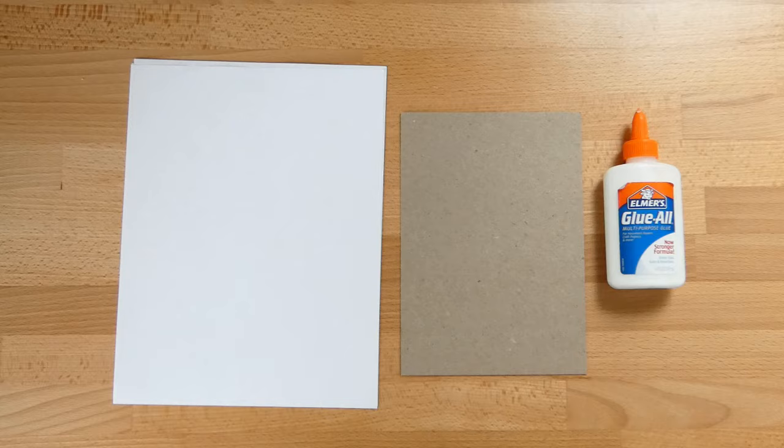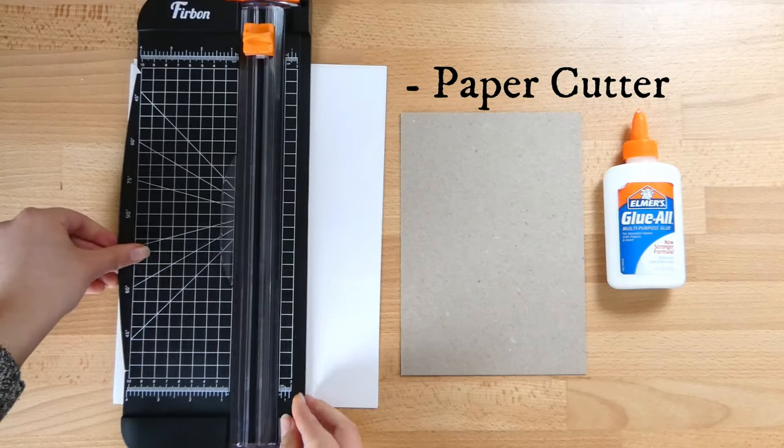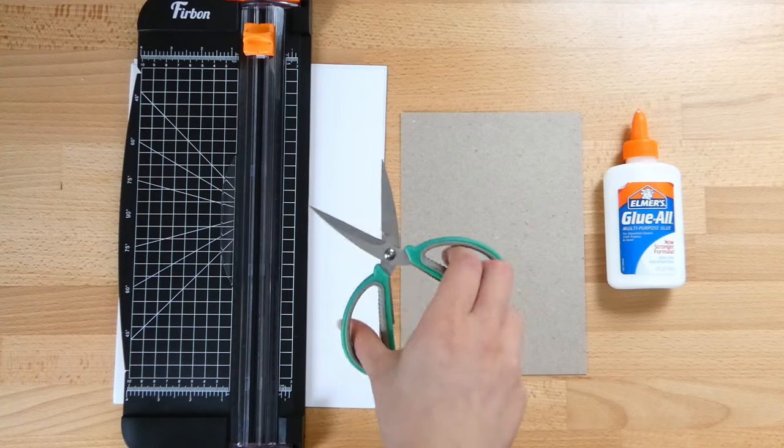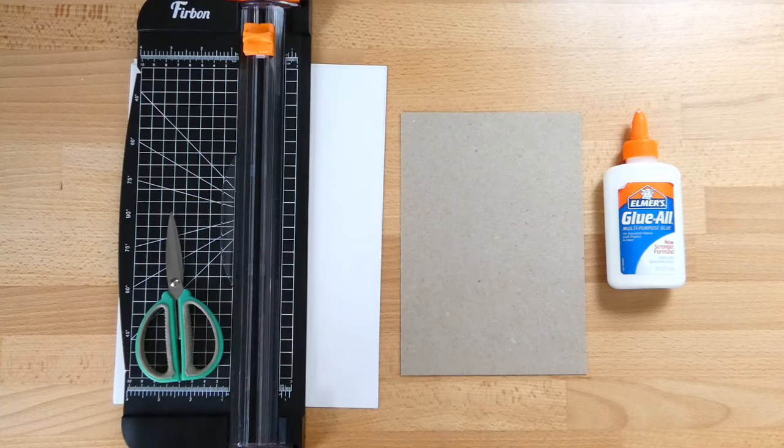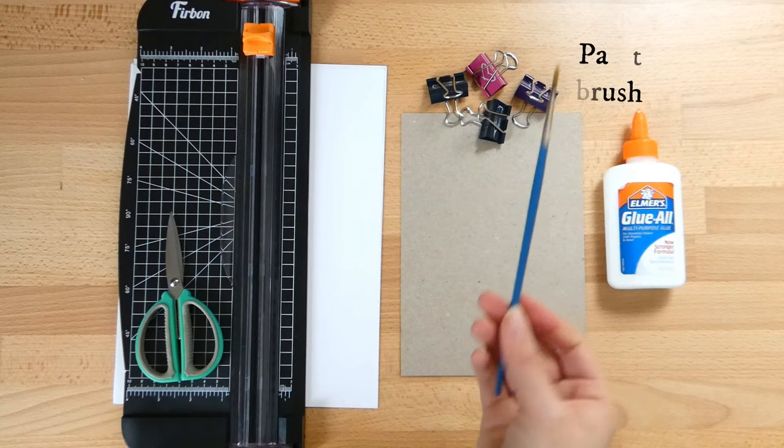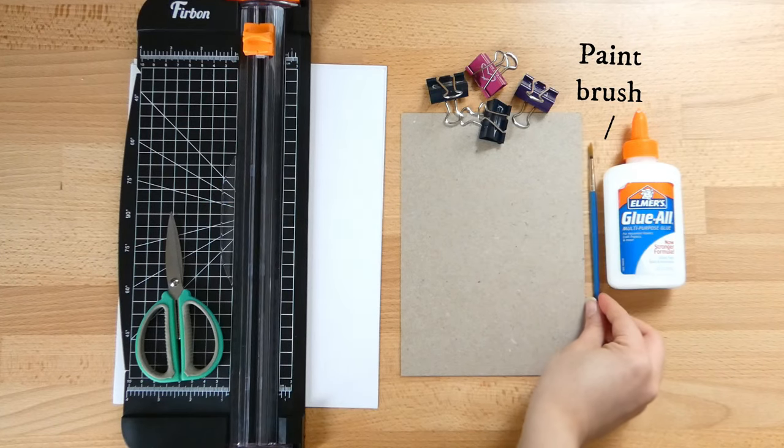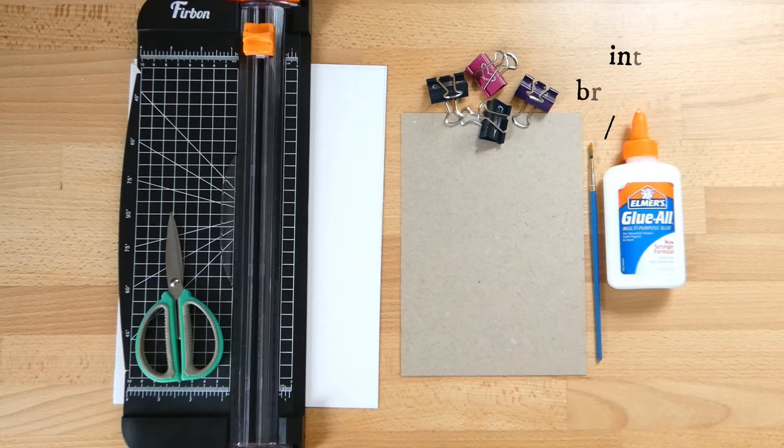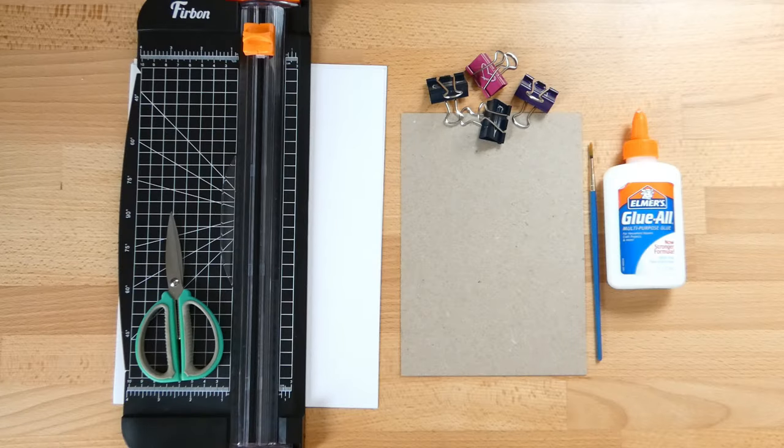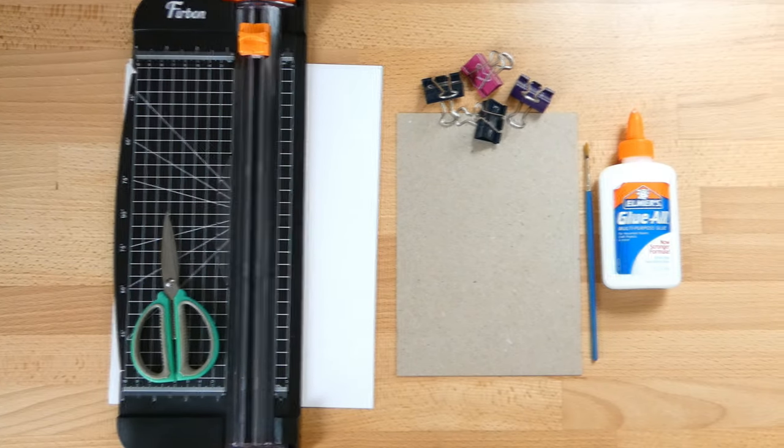As for tools, you will need a paper cutter if you have one. I highly recommend it. It makes things so much easier, but if you do not have one, you can always use a regular pair of scissors. You will also need some binder clips and a small paintbrush. And that's it. I will have the full list of tools and materials listed down in the description box, including all of the specific ones I'm using in this video. So let's make some notepads.